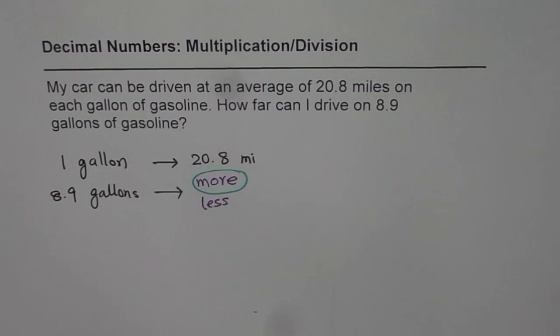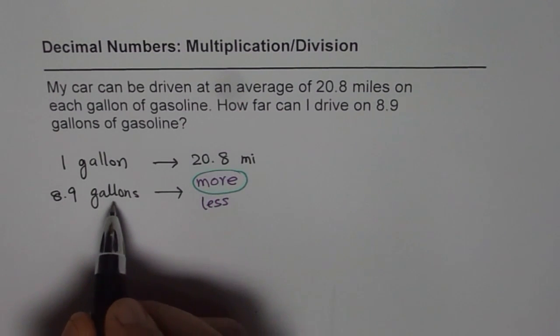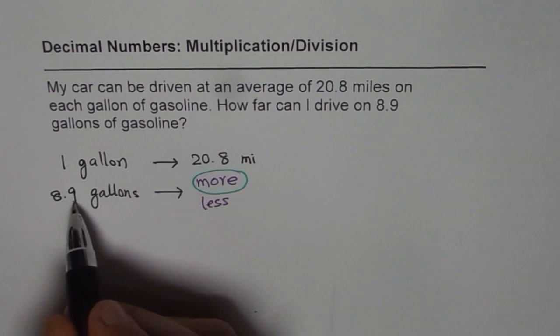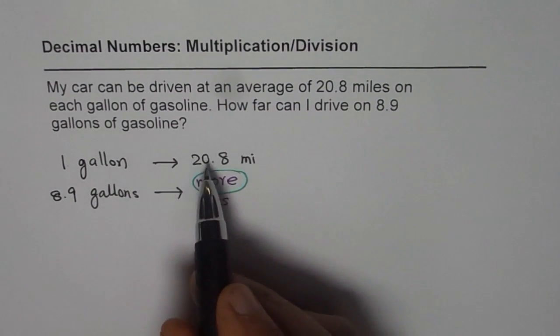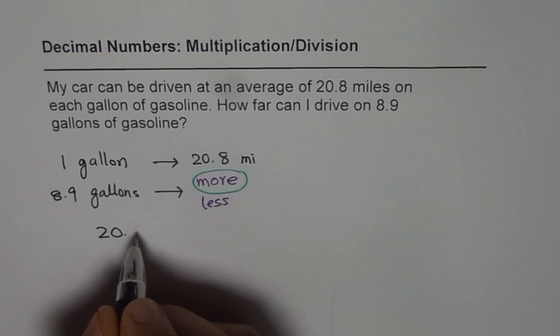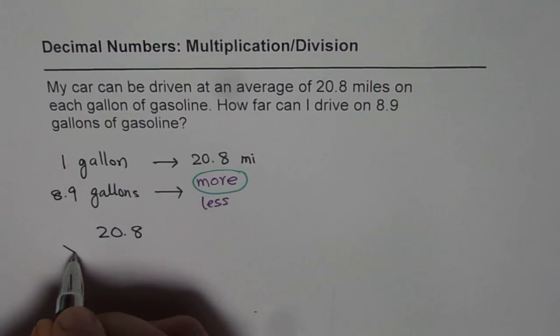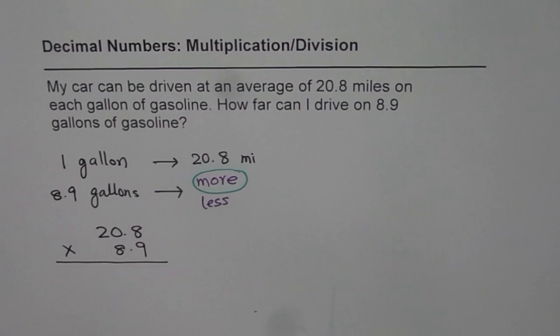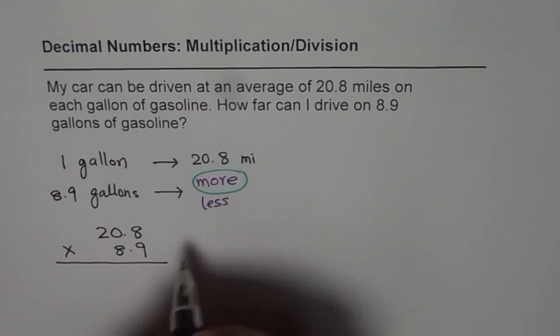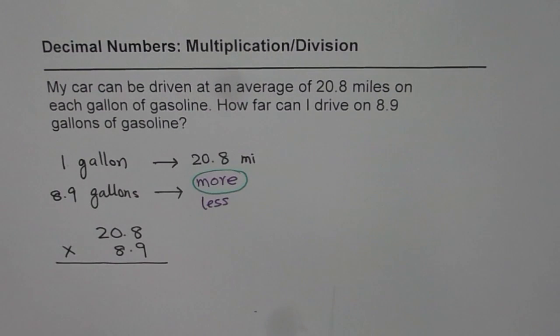When we have decided that it is more, then how will you get an answer which is more than 20.8 miles? Multiplication. That is it. So we have decided that since 8.9 gallons is much more than one gallon, it is 8.9 times. Therefore, the distance should also be 8.9 times. So what we get is 20.8 times 8.9. That is our answer, and the units will be miles.